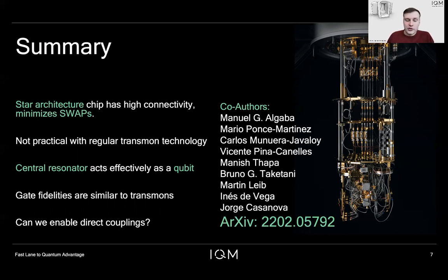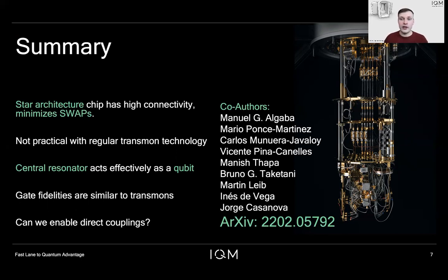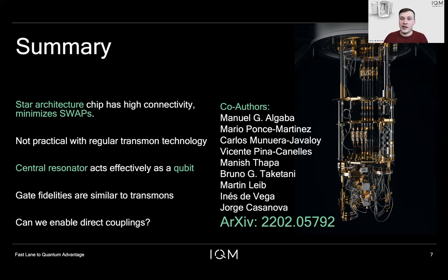Future research questions include: how far can we push this, and how many qubits can we couple to the central resonator? Can we enable direct couplings between two qubits instead of going via the resonator? That would have advantages in that we can further remove iSWAP gates, but these direct gates need to be just as high fidelity and just as fast as the gates we can do via the resonator.